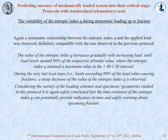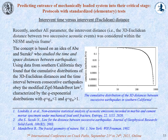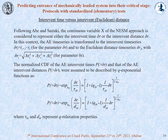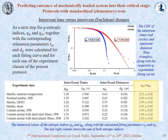Another parameter used in the NESM frame is the inter-event distance, according to an idea of Abe and Suzuki who studied time and space distances between earthquakes. They found that the cumulative distributions of the time and space distances between consecutive earthquakes obey the modified Zipf-Mandelbrot law, characterized by Q-exponential distributions with Q lower than 1 for the inter-event distances and greater than 1 for the inter-event times. This idea was applied in a rich laboratory protocol. After proper curve fitting, the Q-entropic indices for the inter-event times and the inter-event distances were calculated. Exactly as predicted by Abe and Suzuki for the earthquake time series, the sum of the two entropic indices is equal to 2 with negligible scattering.